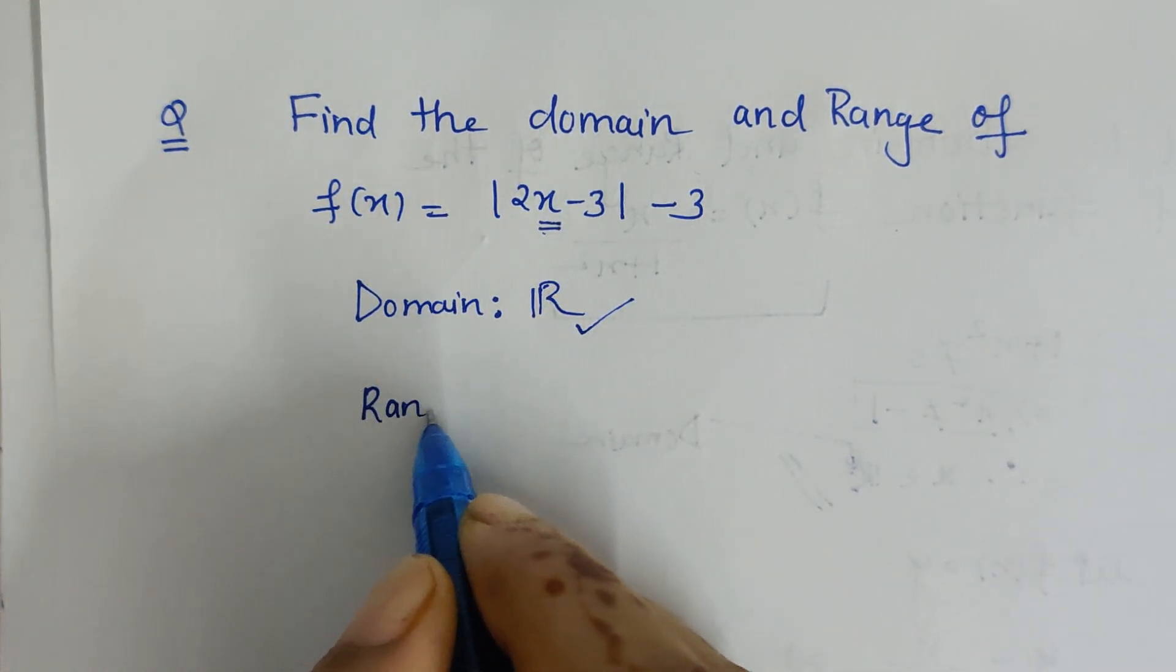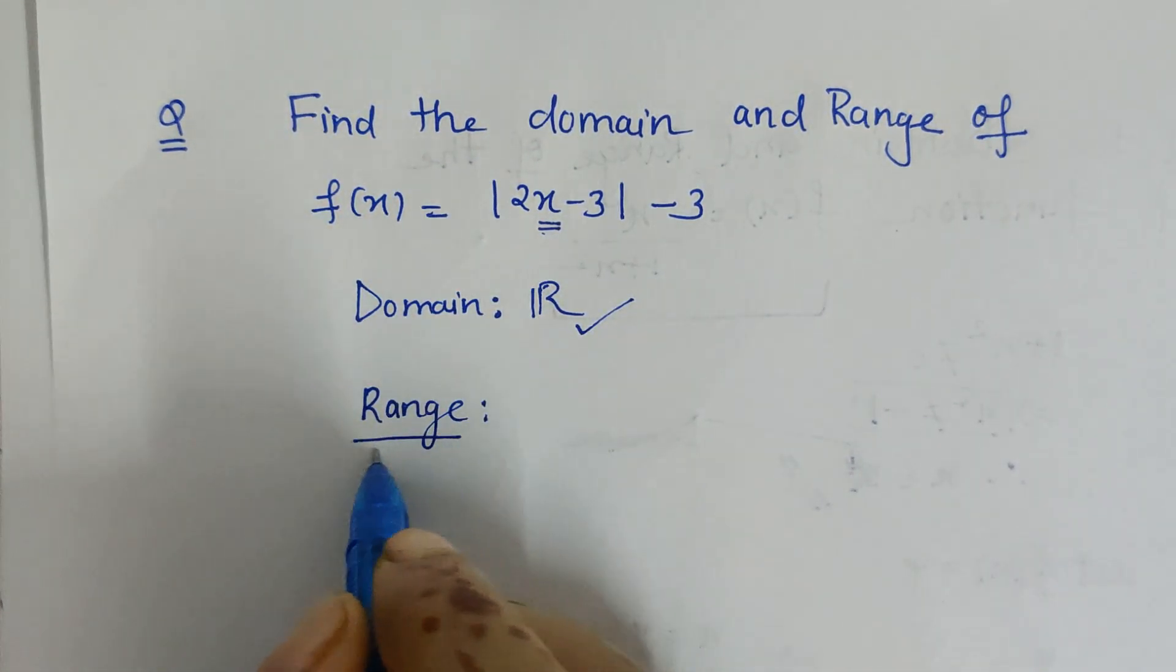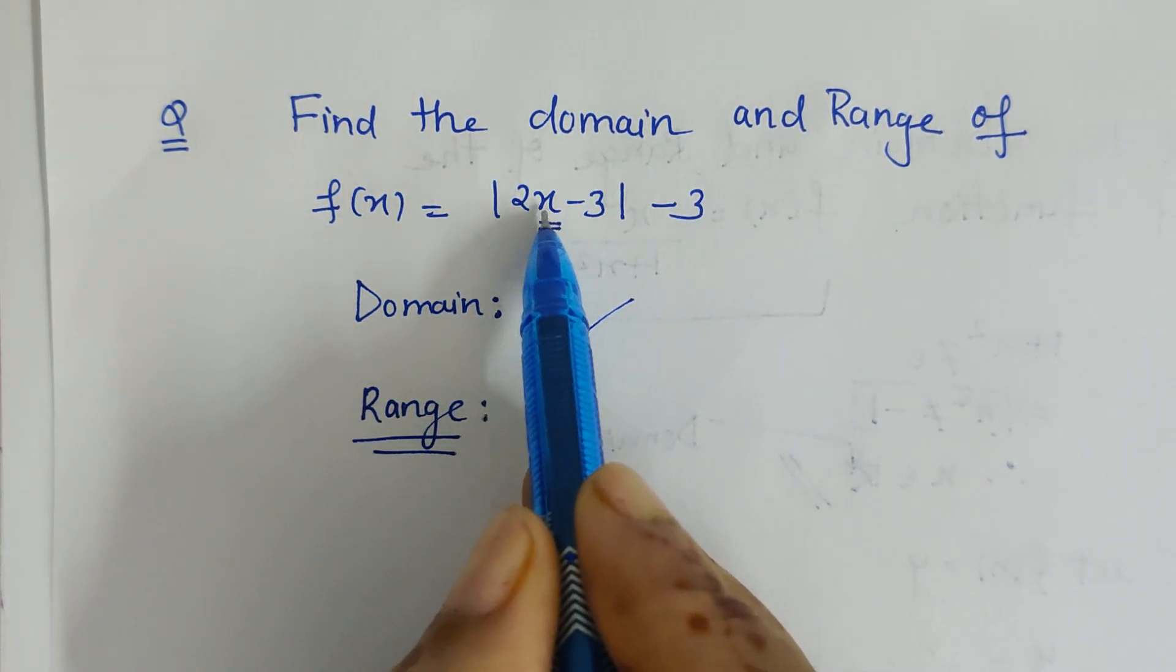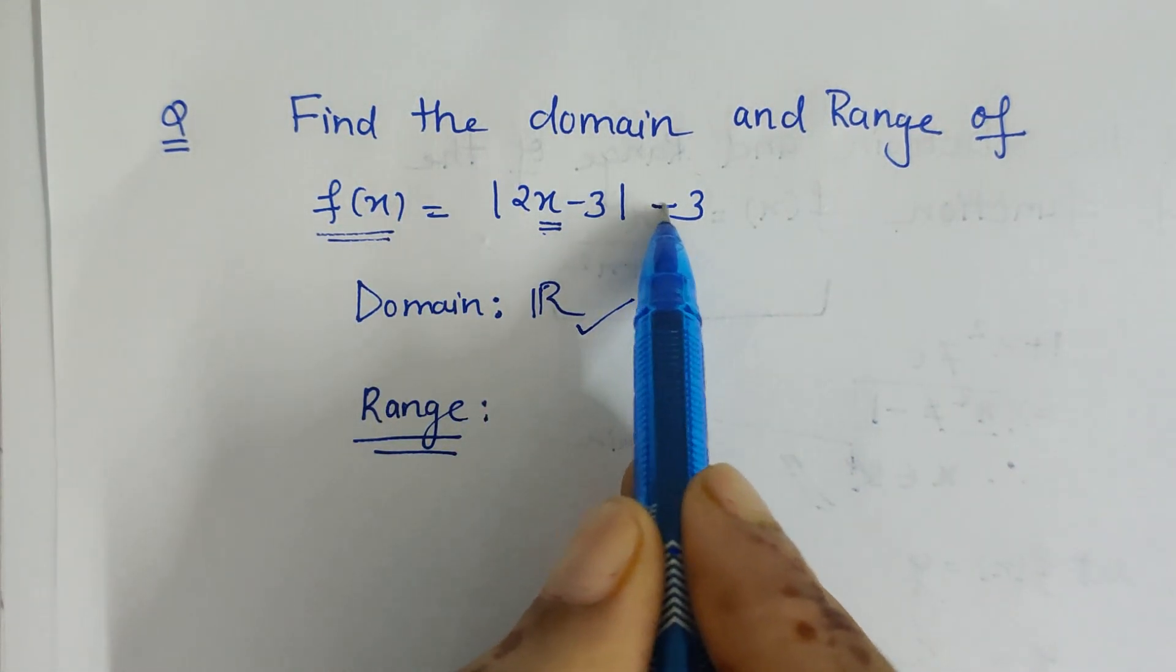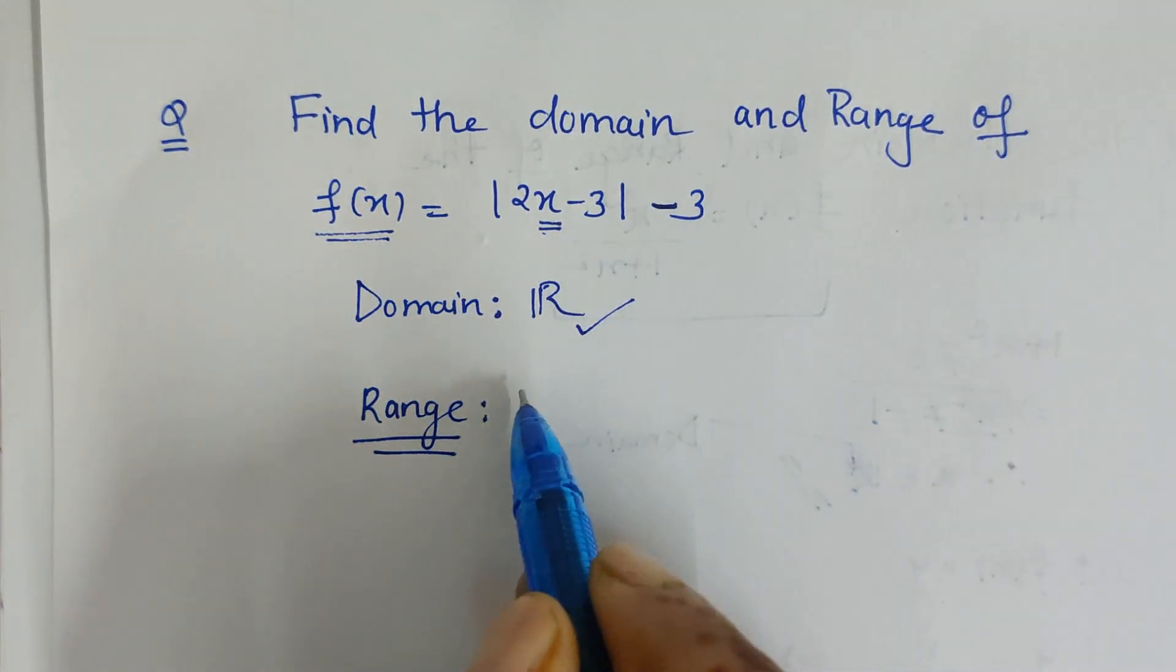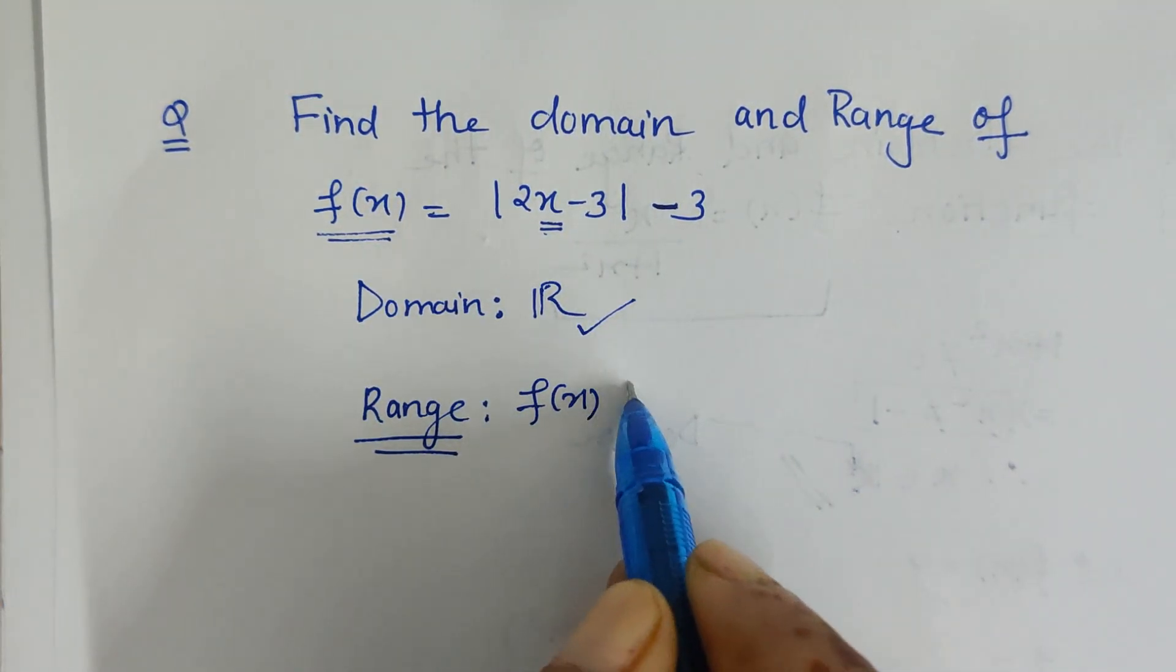Now let's talk about range. When we are talking about range, whatsoever value we put here, my function will give value either equal to -3 or greater than -3. That means my function is always greater than or equal to -3.